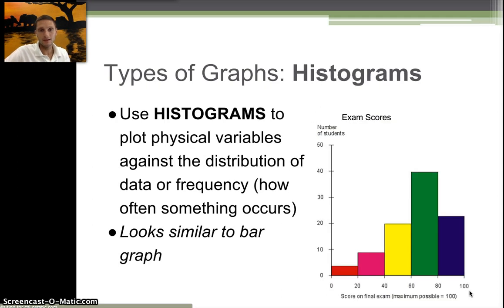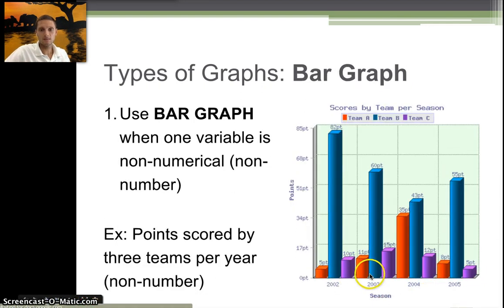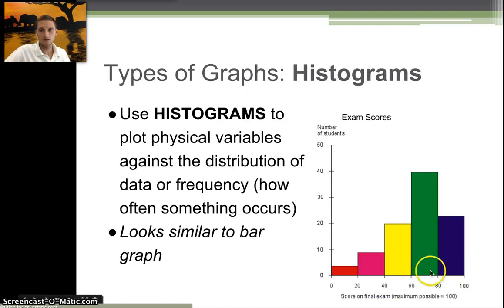The second type of graph is called a histogram, and it's very similar to a bar graph but not quite the same. The biggest difference with a histogram is it's a continuous distribution of the data or the frequency of how often something occurs. If we go back to the bar graph real quick, you can see there's some space between these individual bars. The histogram is continuous, you can see that all of these bars are connected here.